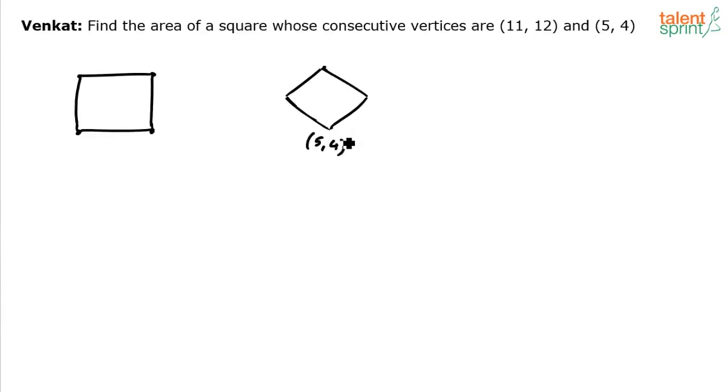Let's say this is (5, 4) and this is (11, 12). To find out the area of a square, you should know the side of the square. So all I have to do is find out the length of the side. The length of the side is nothing but the distance between these two points.